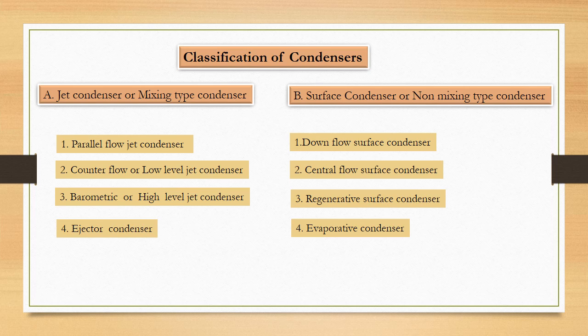Now types of non mixing type that is surface condenser. They are: down flow surface condenser, central flow surface condenser, regenerative surface condenser, and evaporative condenser.